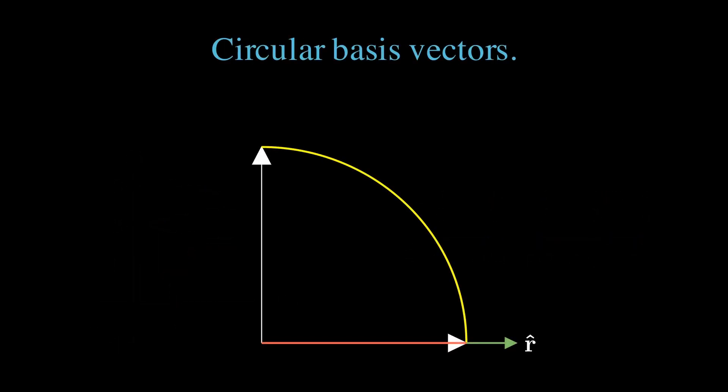In a circular coordinate system, the basis vector is defined at each point along a circular arc. These basis vectors are rotations of the standard basis vectors.